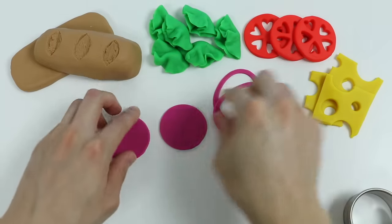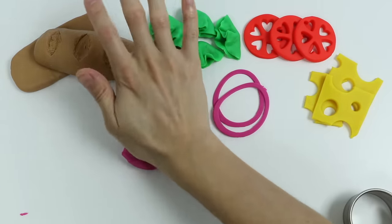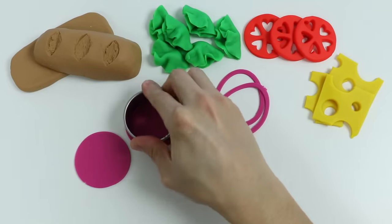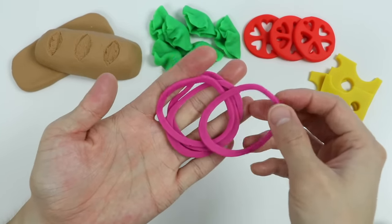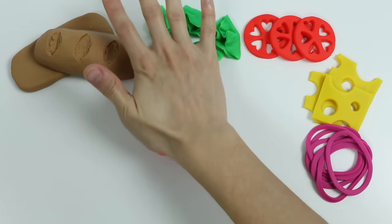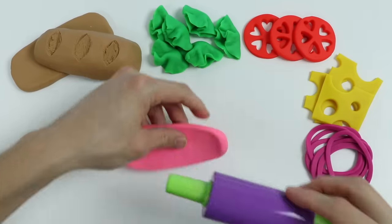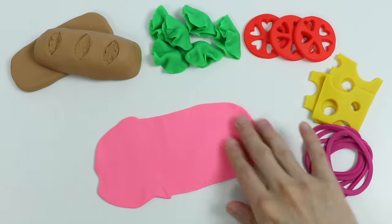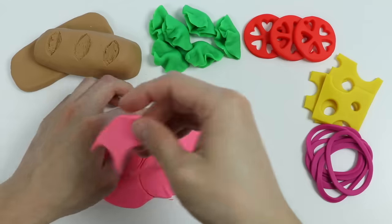Now let's roll out some pink Play-Doh. Awesome, now we have a handful of red onion slices. All right, now let's roll out some pink Play-Doh. We'll use the circle cutter again. Let's make a couple more.